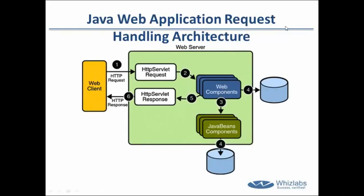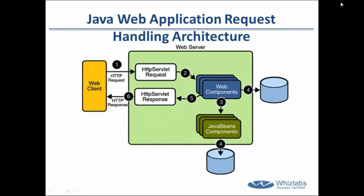So, purpose and structure — this is a diagram about how your web application works. The web client is your browser. Whenever you say google.com, it sends a request which we call an HTTP request. It sends it to your server and calls a web resource.